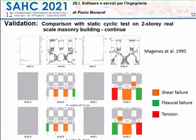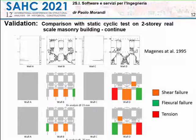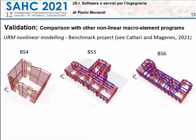An interesting feature is that not only are the force-displacement curves in agreement with the test results, but also the damage pattern. Here we can see a comparison between the damage pattern found in the experimental tests and those evaluated from the model. As you can see, the shear and flexural failures are well captured by this simple idealization of the structure.